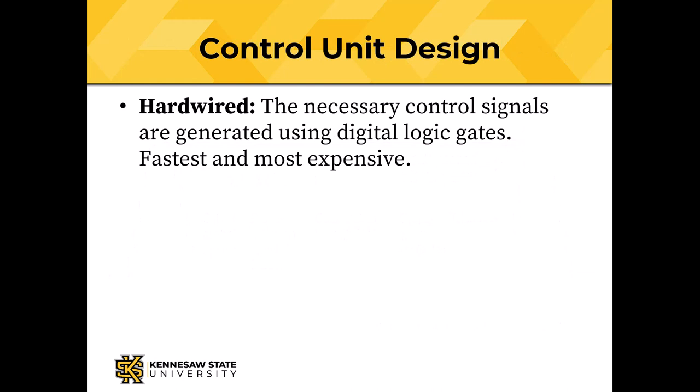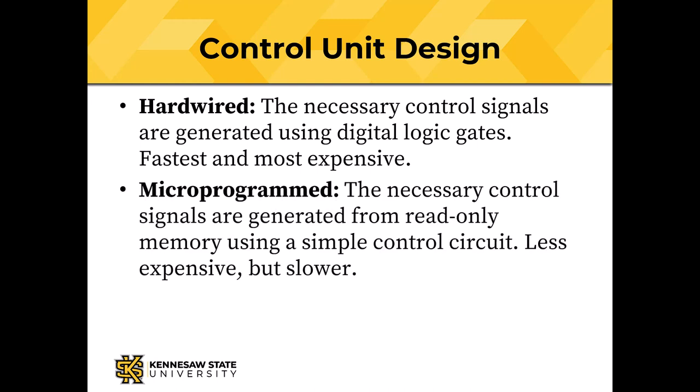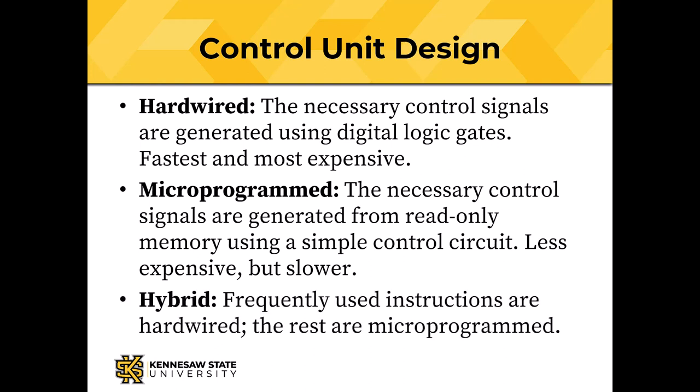There are two ways to design a control unit. Hardwired control units generate the necessary control signals using digital logic gates. They're fast, but expensive because of the number of gates needed. Microprogrammed control units use a read-only memory to generate the bits of the control signals. Each word in the ROM must have enough bits to generate all control signals, and there must be one word for each data path cycle. Microprogrammed control units are less expensive because they need fewer gates, but also slower because a ROM access is needed for each data path cycle. They also have the advantage that the microprogram can potentially be changed. Some modern CPUs use hybrid control units, where frequently used instructions are hardwired and less frequently used ones are microprogrammed.